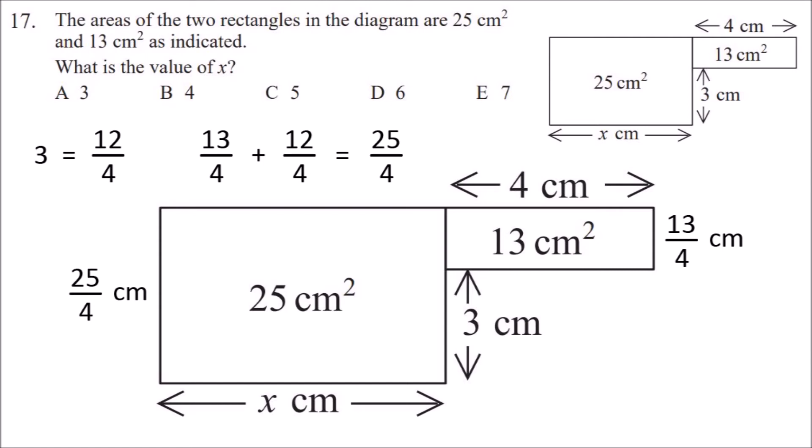So now we know one of the side lengths of the larger rectangle, we can do the same again and divide the area by that side length. So 25 divided by 25 over 4 would just leave x to be 4.